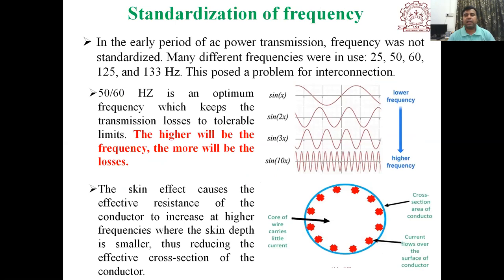Many different frequencies were in use — some regions used 25 Hz, some used 50 Hz, 60 Hz, 125 Hz, and 133 Hz. This obviously posed a problem for interconnections. We know that to connect two AC power systems, the frequency must be the same, the voltage magnitude must be the same, and the phase sequence must be the same. These are the criteria for connecting AC power systems, so operating at different frequencies made interconnection impossible.